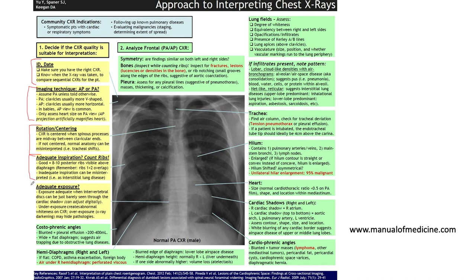Check for adequate exposure by looking just beyond the cardiac silhouette — you should see some detail of the intervertebral discs. If you can't see that, the film is probably underexposed.